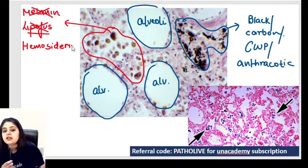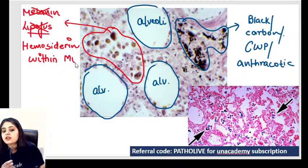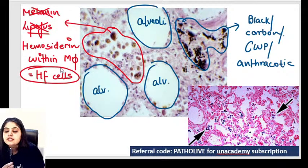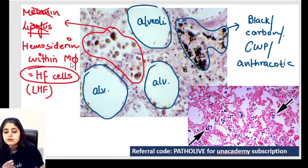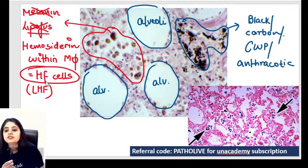Another brown color pigment I know is hemosiderin. There is one disease in which hemosiderin in the lungs is called heart failure cells — hemosiderin within macrophages. This is a case of heart failure cells. Which sided heart failure? Left-sided heart failure is famous for showing heart failure cells or hemosiderin within macrophages.